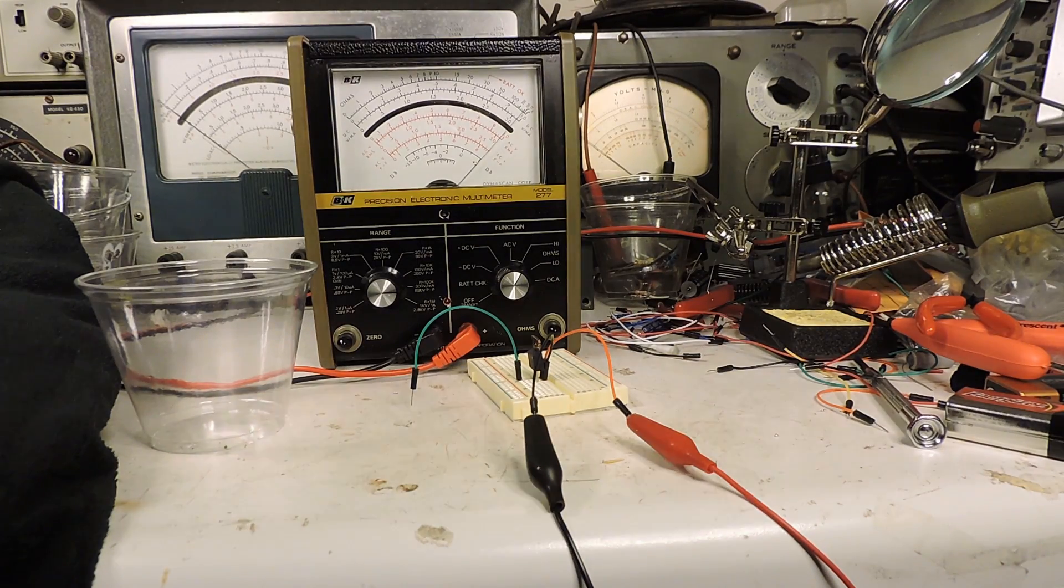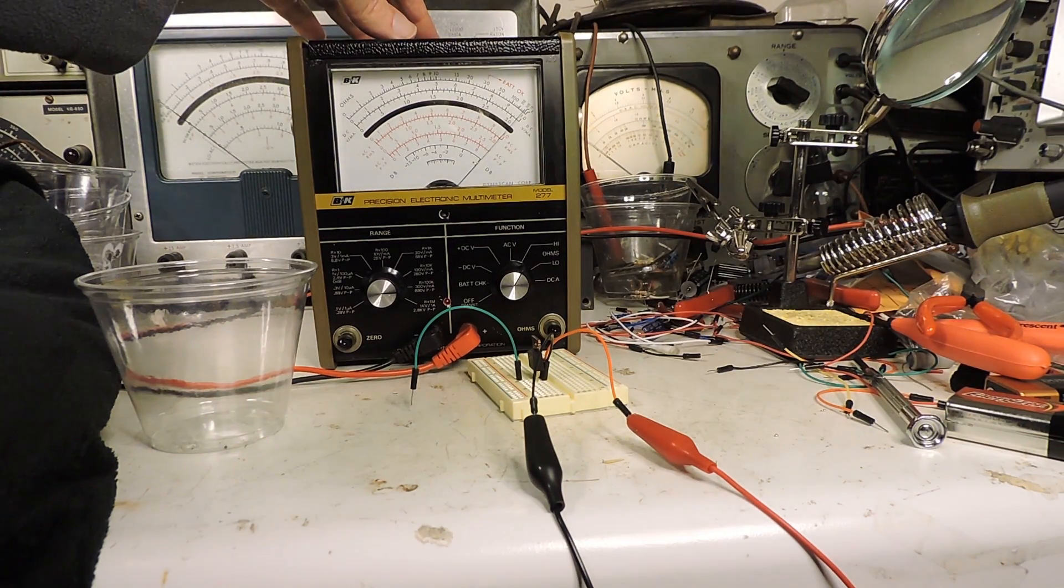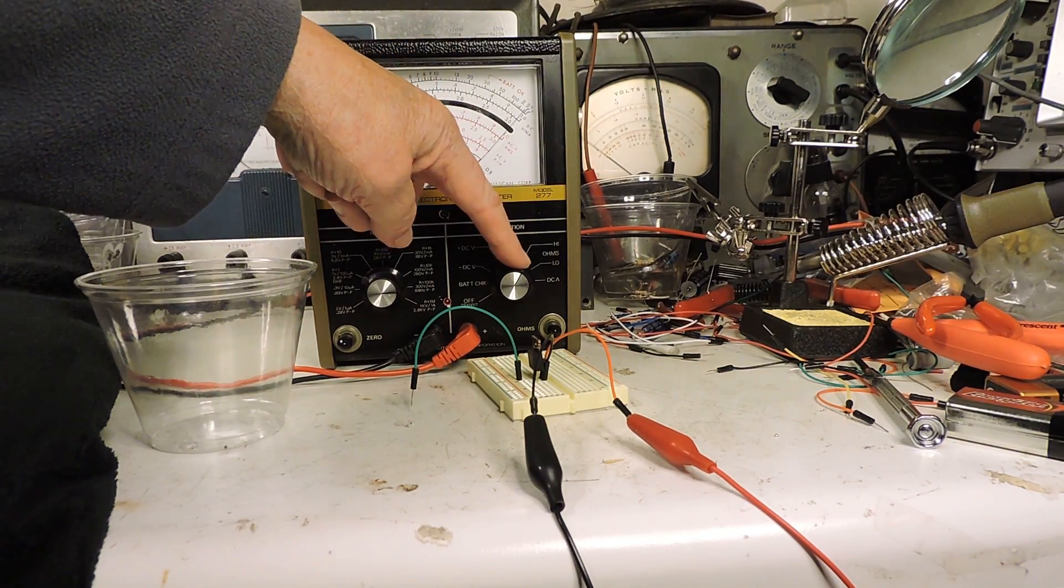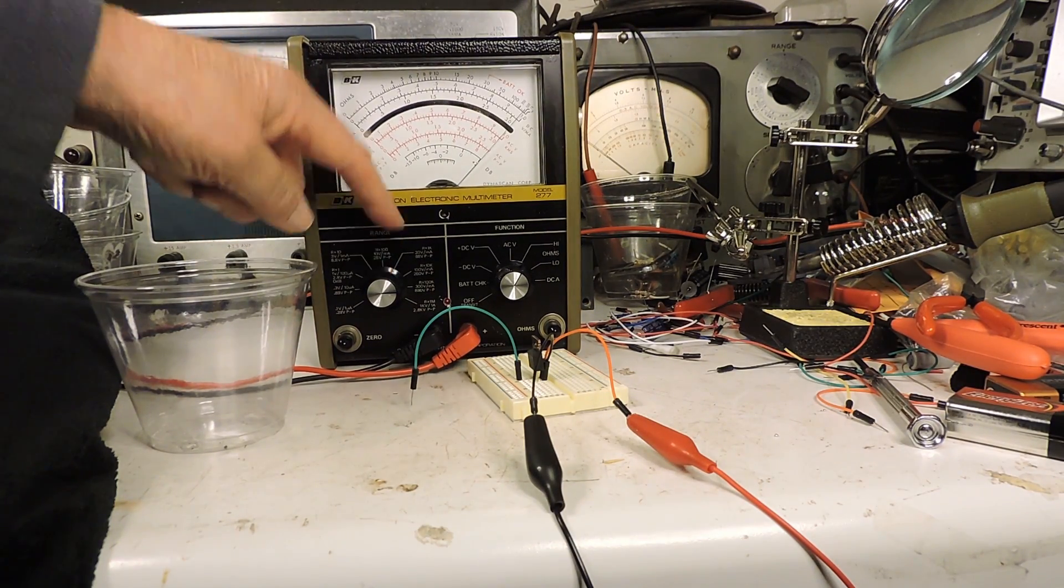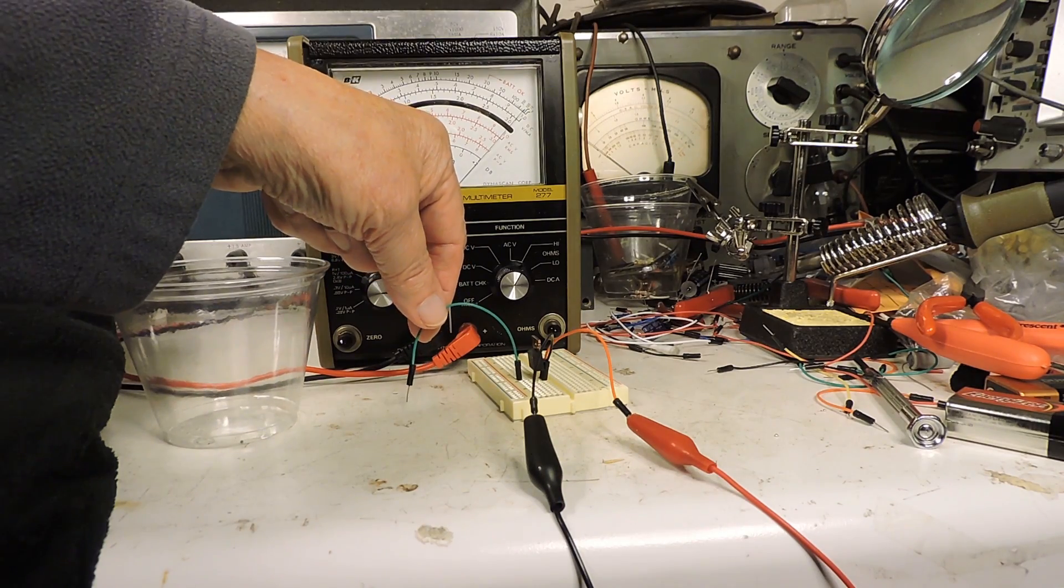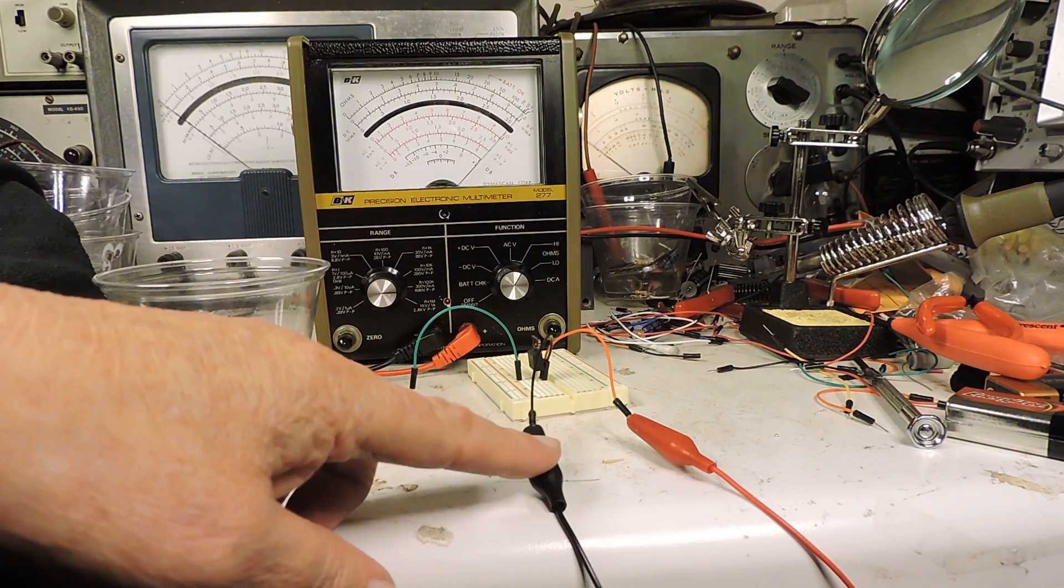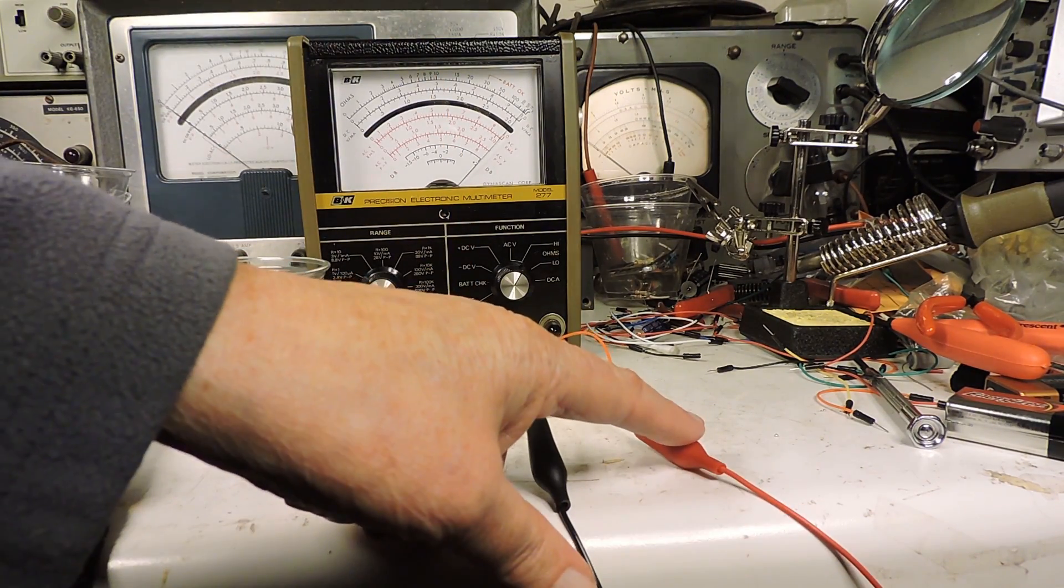Here's the setup. Our meter is set on ohms right there and it's on R times 100k. This is the gate of the MOSFET. This is the source and this is the drain.